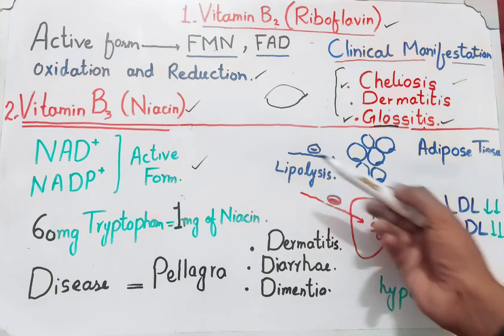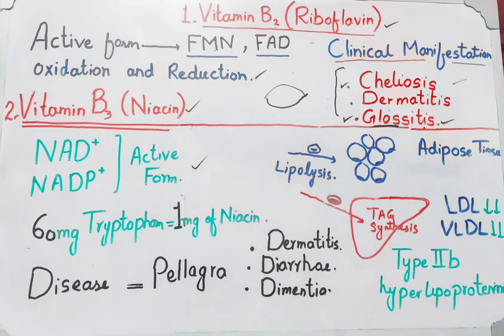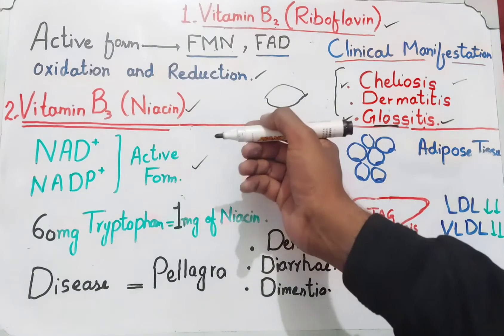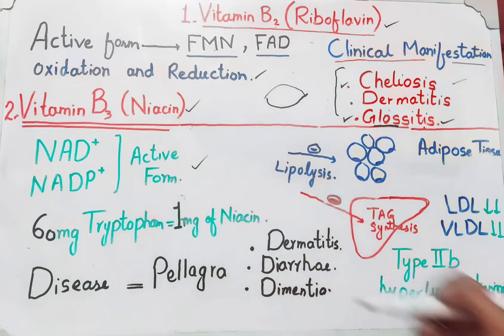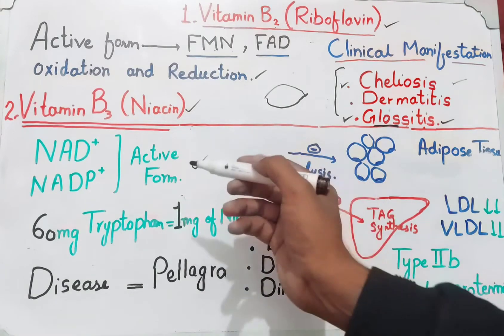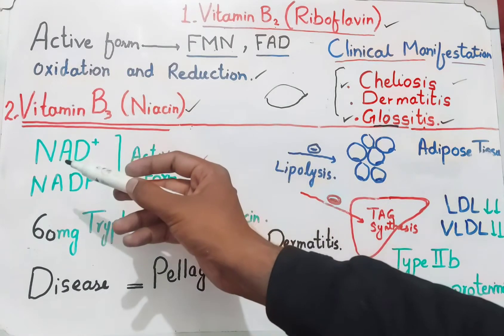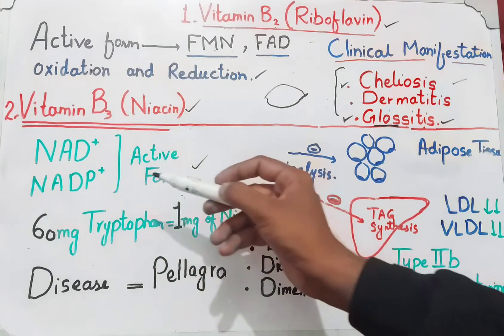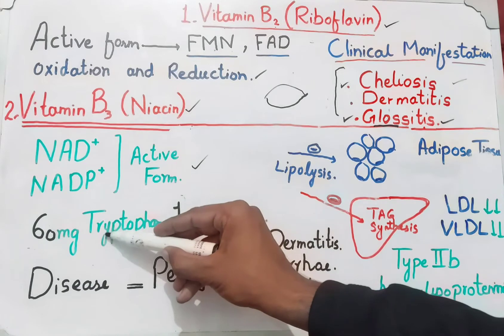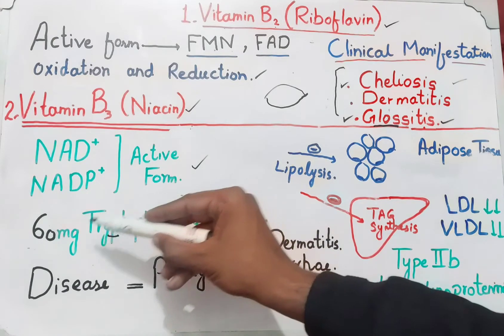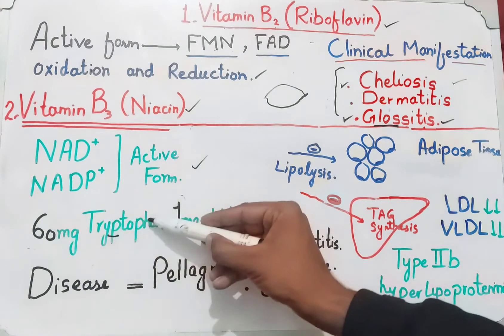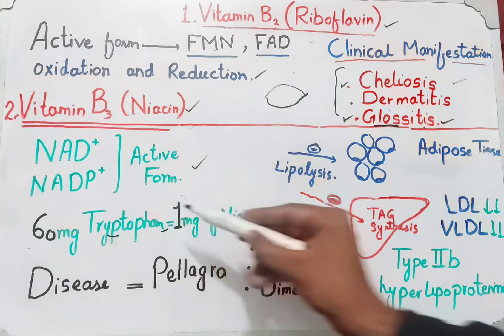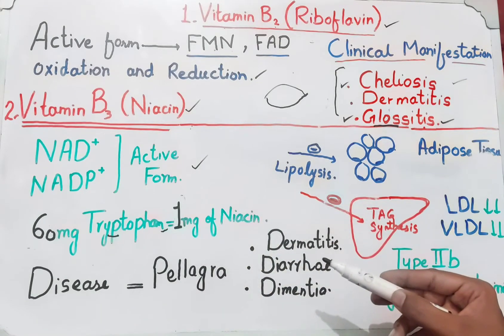Now the most important vitamin is B3, which is also known as niacin. Its active forms are NAD+ and NADP+. NAD stands for nicotinamide adenine dinucleotide, and NADP is its phosphate form. Niacin is mainly derived from the amino acid tryptophan — 60 mg of tryptophan is involved in the formation of 1 mg of niacin.